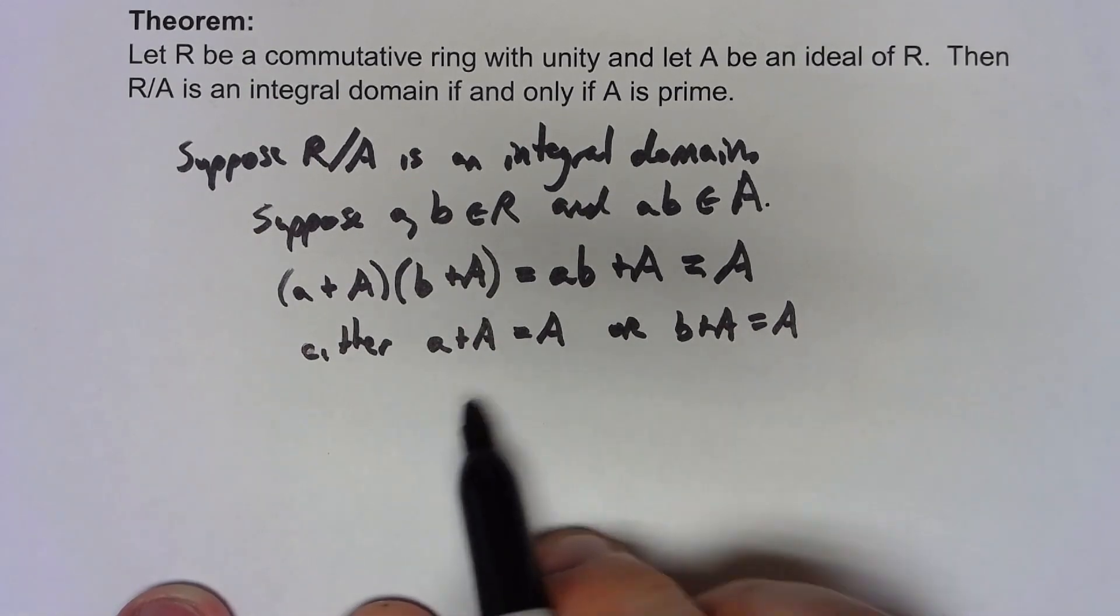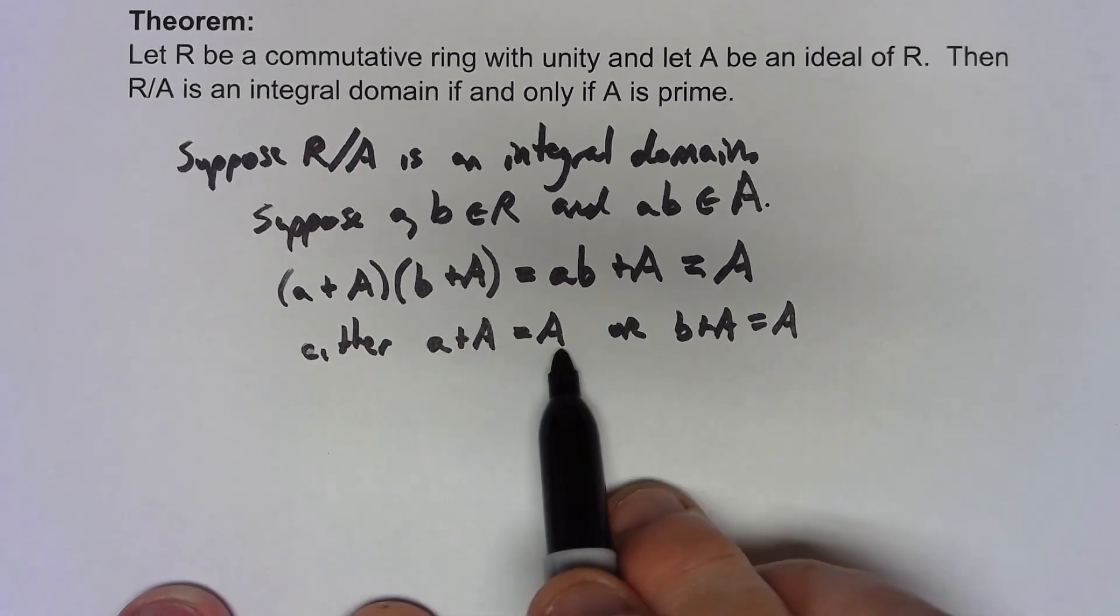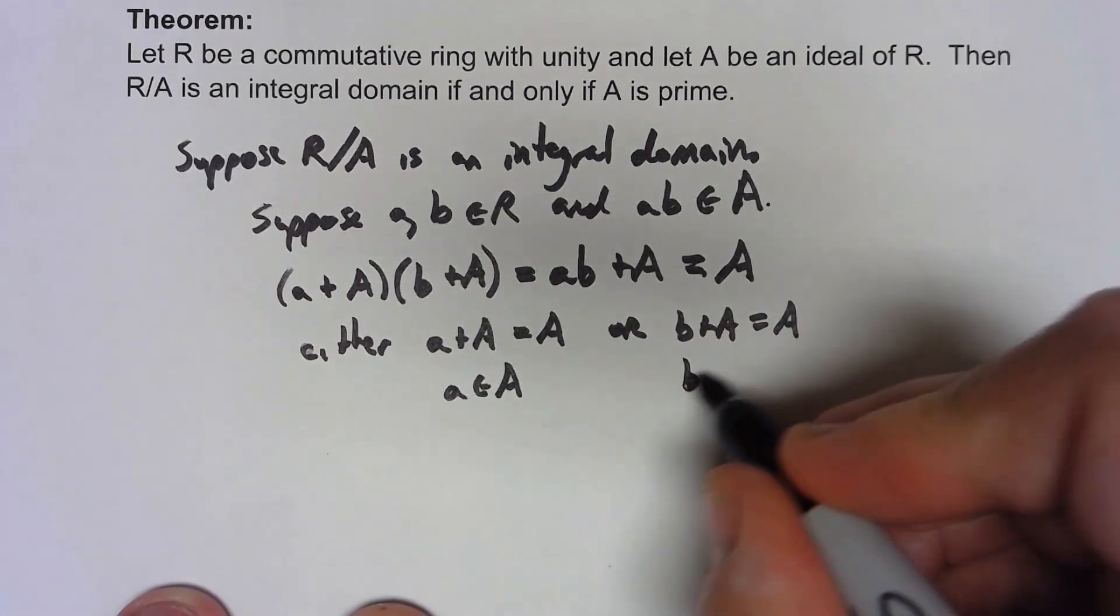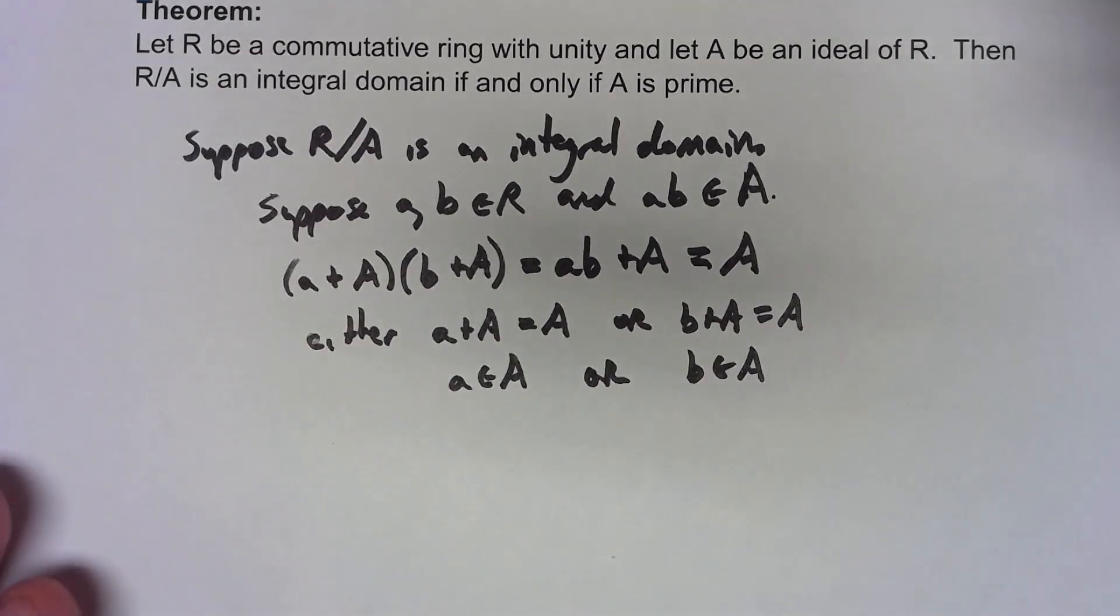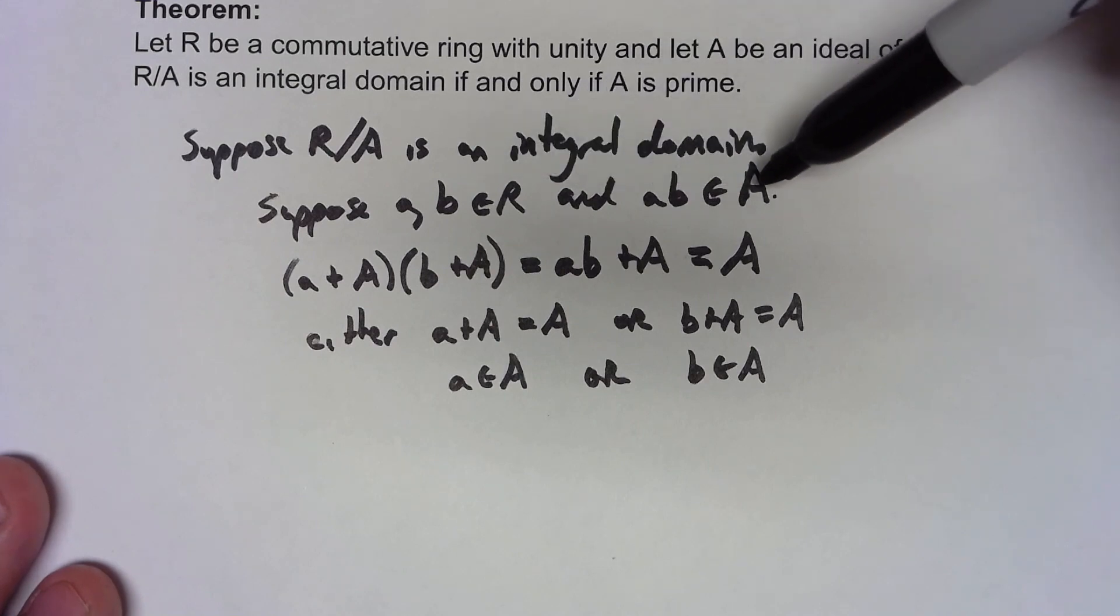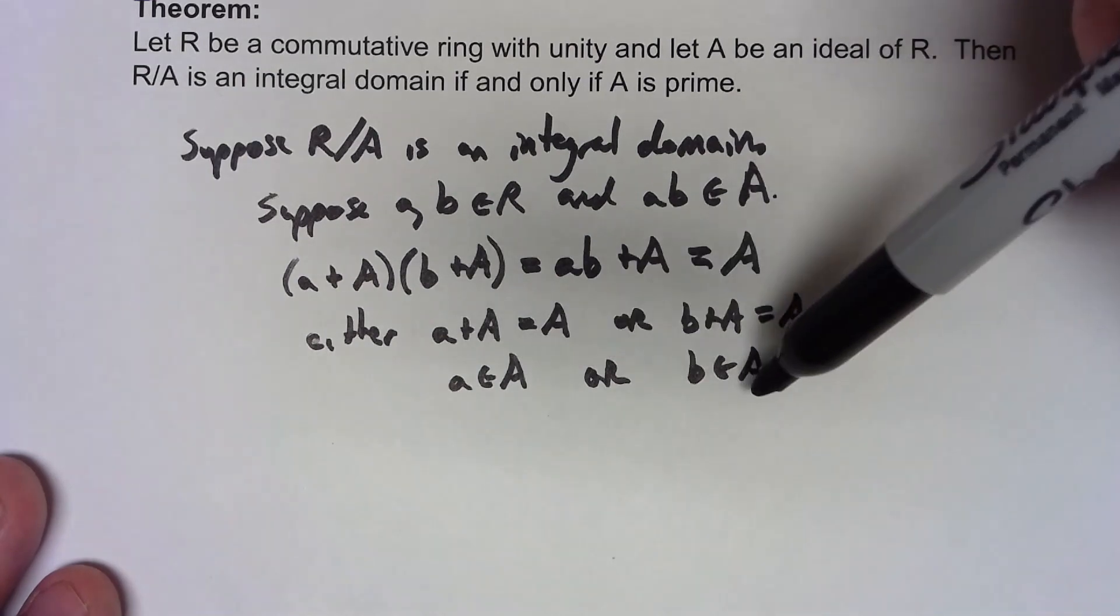But again, that means if a+A is equal to A, that must mean that a is an element of A. Or similarly, b is an element of A. So there we go. If a, b are in R and ab is an element of A, when R/A was an integral domain, it must mean that one of those two things was in the ideal, which meant that A was a prime ideal.